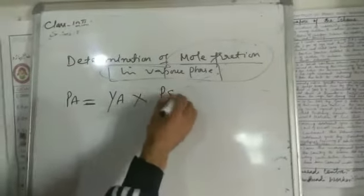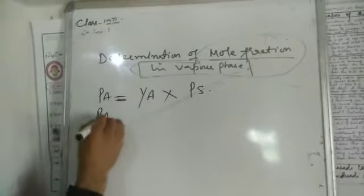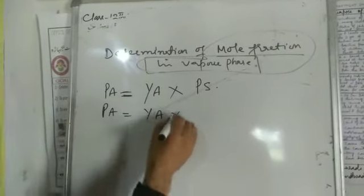So we can write this as PA is equal to YA into PS.